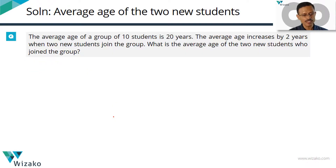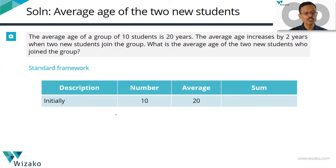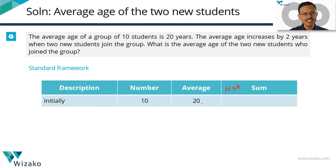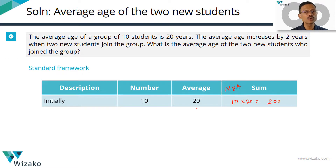Let's get into the standard framework. The standard framework has three components: number, average, and sum. Sum is nothing but number multiplied by average. Initially there are 10 students and their average age is 20. So the sum of their ages is equal to 10 into 20, which equals 200 years.